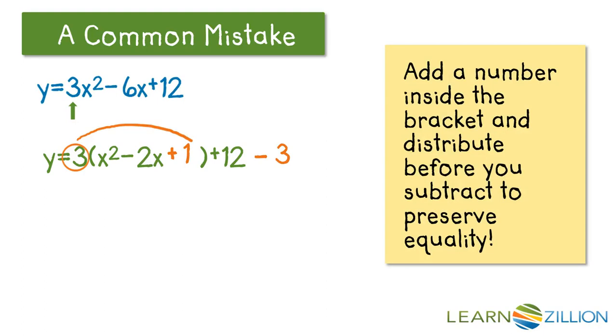Here's a little reminder for you. Now let's bring down the 3, and the trinomial, we can factor that into x minus 1 quantity squared, and 12 minus 3, that'll give us 9.